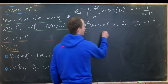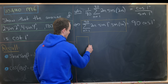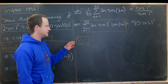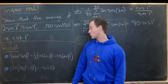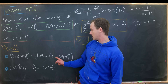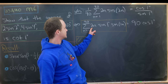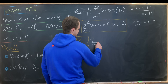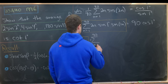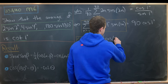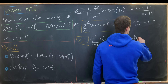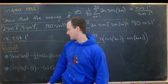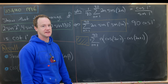Let's box this in orange as our starting point. The first thing we'd like to do is use our product-to-sum formula to rewrite the product of sines as a sum of cosines. Notice the factor of two built into our sum will cancel with the one-half from the identity, leaving something nice. This gives us the sum as n goes from one to 90 of n times cosine of two n minus one minus cosine of two n plus one, using the fact that cosine is even.